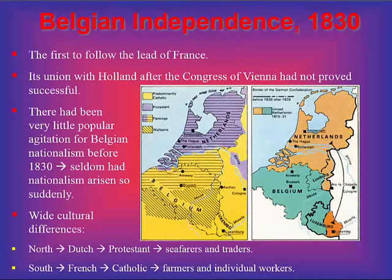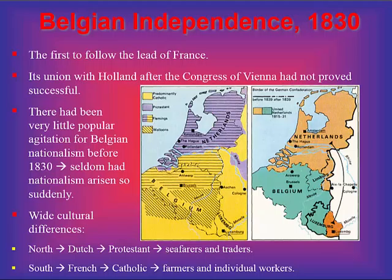During all this time, Belgium also declared independence. Its union with Holland after the Congress of Vienna had not proved successful, and there had been very little popular support for Belgian nationalism prior to 1830. But nationalism rose quickly, exposing wide cultural differences — the North mostly Dutch and Protestant, the South mostly French and Catholic. Meanwhile, on August 2nd, Charles X abdicated and left France, and the Chamber of Deputies proclaimed his cousin Louis-Philippe, the Duke of Orleans, King of France. Had Charles sent enough troops to Paris, the outcome might have been different; had the Liberals not acted quickly, the workers might have attempted to form a republic.